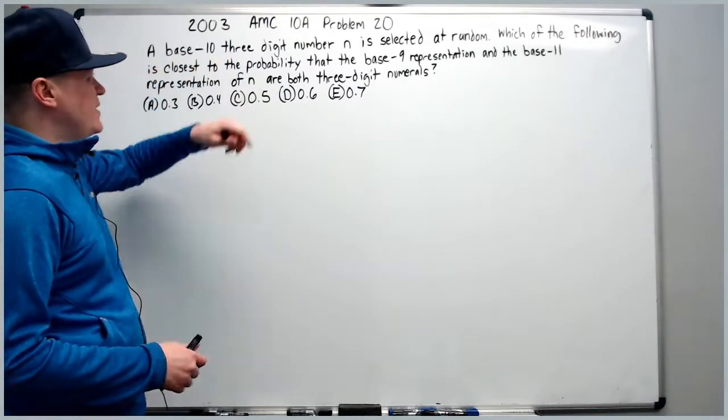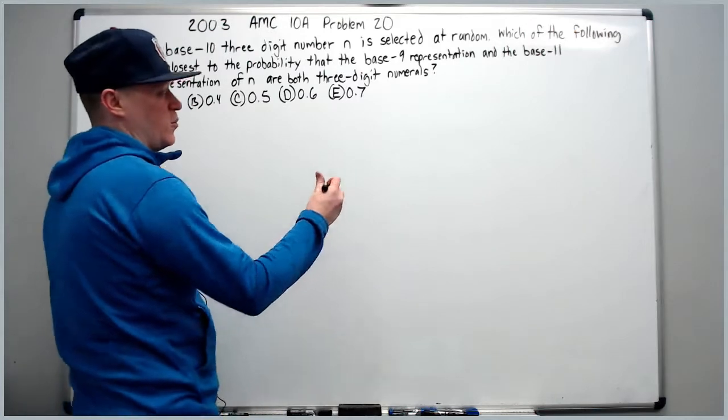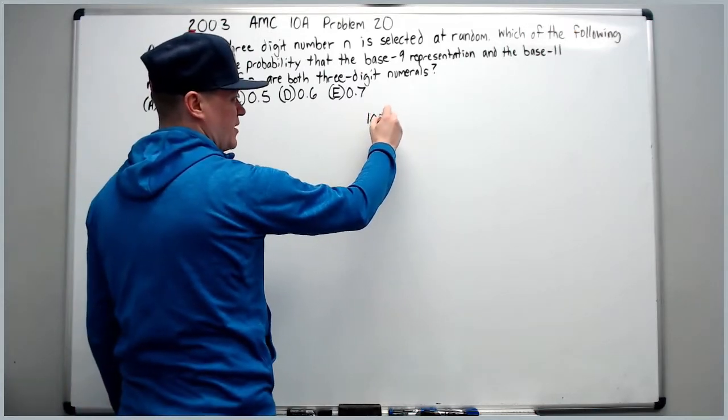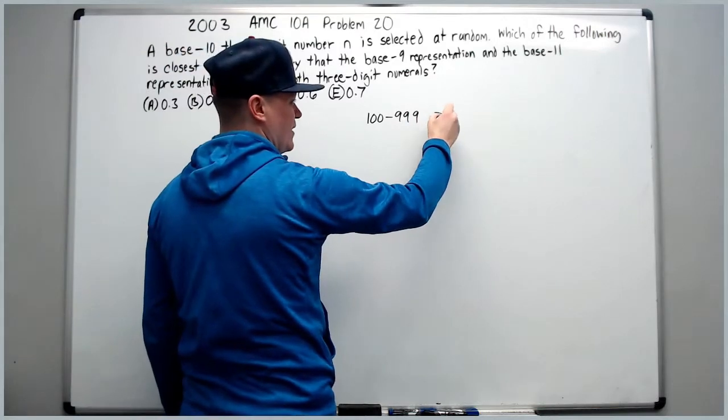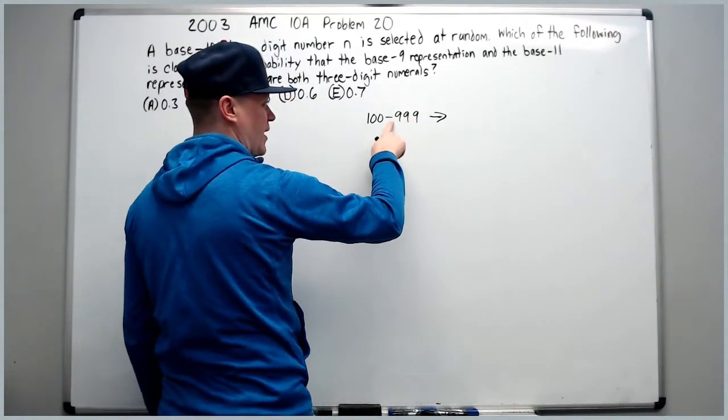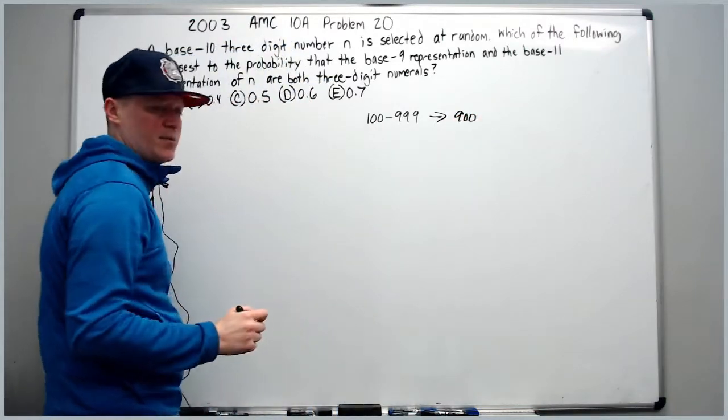A base 10 three digit number N is selected at random. Pause there and think about what that means. It means you're dealing with the numbers from 100 to 999. That is, there are B minus A plus 1, which is 900 such numbers.